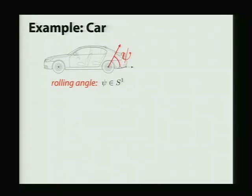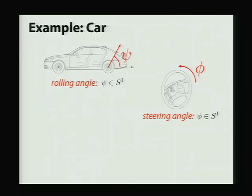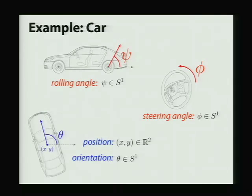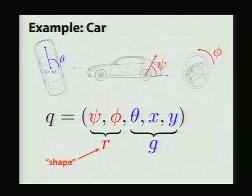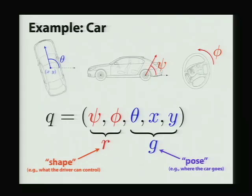Let's go back to our example of the car. We can describe the configuration of the car using several coordinates. For instance, the rolling angle of the rear tire, the angle of the steering wheel, and also the position and orientation in the plane. And it's going to be convenient to encode all this information in a single vector Q, which we're actually going to break apart into two additional pieces, R and G. R is going to represent the shape of the vehicle, meaning what the driver has control over. So the rear wheel angle and the steering angle. And G is going to represent the pose, meaning where the car actually goes, what do we actually observe.